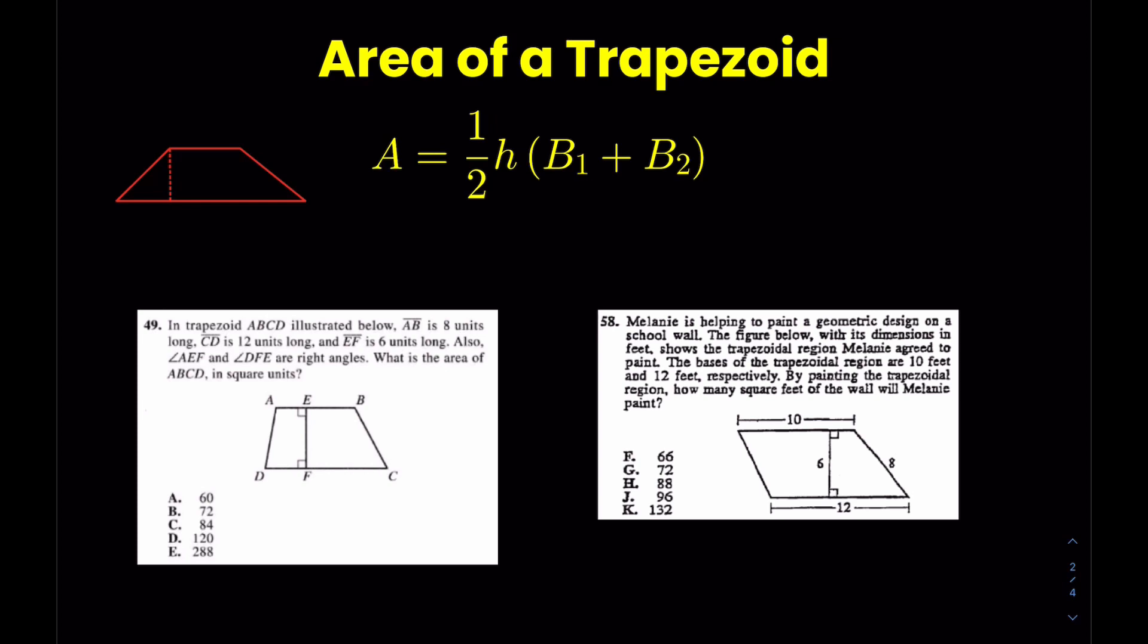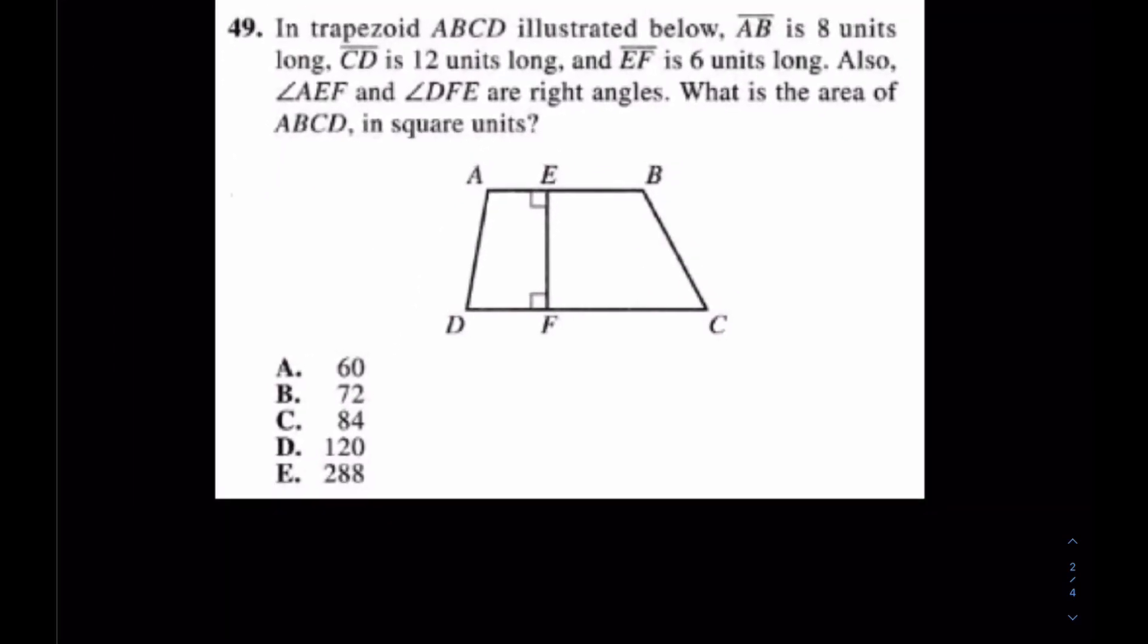Let's get started with number 49. What does it say? Well, my eye really only catches on the numbers and the question. It says, what is the area of this? EF is 6, AB is 8, and CD is 12.